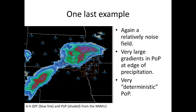Just one last example — this is from the NAM-12. Again, you can see the tight gradient where you go from basically zero to 100% or near 100% in less than one county. Remember, this is fourth period — this isn't first period. So you get what I would call a very deterministic-looking POP. It looks like the QPF field because that's what it's based on. You end up with something that's much more deterministic than a probability field really should be, especially as you get out through third or fourth period.